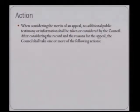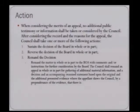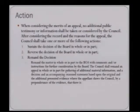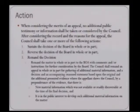The actions that may occur tonight, as stated in the zoning code, are as follows. When considering the merits of an appeal, no additional public testimony or information shall be taken or considered by the council. After considering the record and the reasons for the appeal, the council shall take one or more of the following actions: sustain the decision of the board in whole or in part; reverse the decision of the board in whole or in part; or remand the matter in whole or in part to the Board of Adjustment with comments and/or instructions for further consideration. The council shall remand an appeal where the appellant shows by a preponderance of the evidence that there is new material information which was not available or readily discoverable at the time of the final decision, and that it is in the public interest to develop such additional material information. With that, I am available for questions.